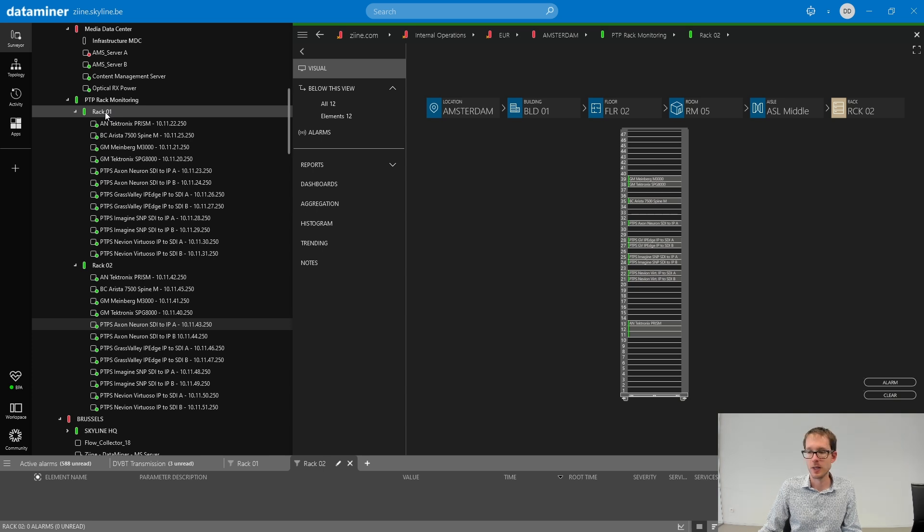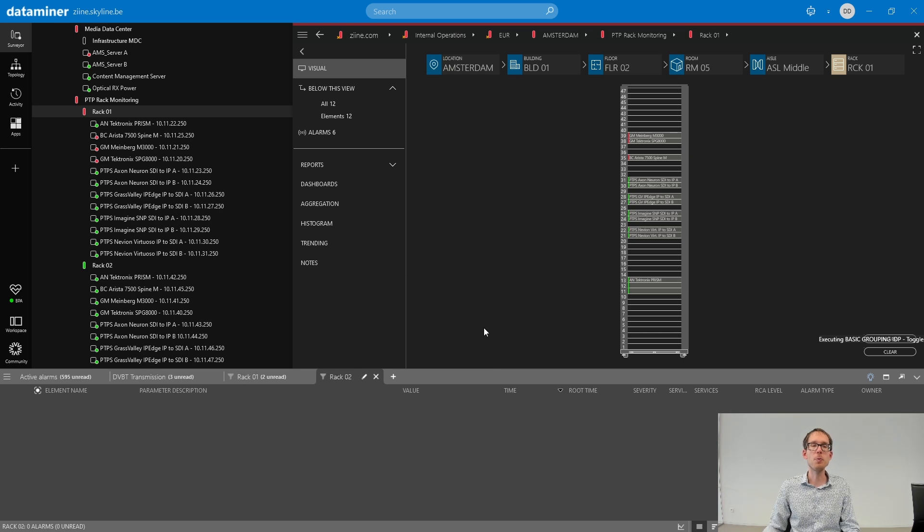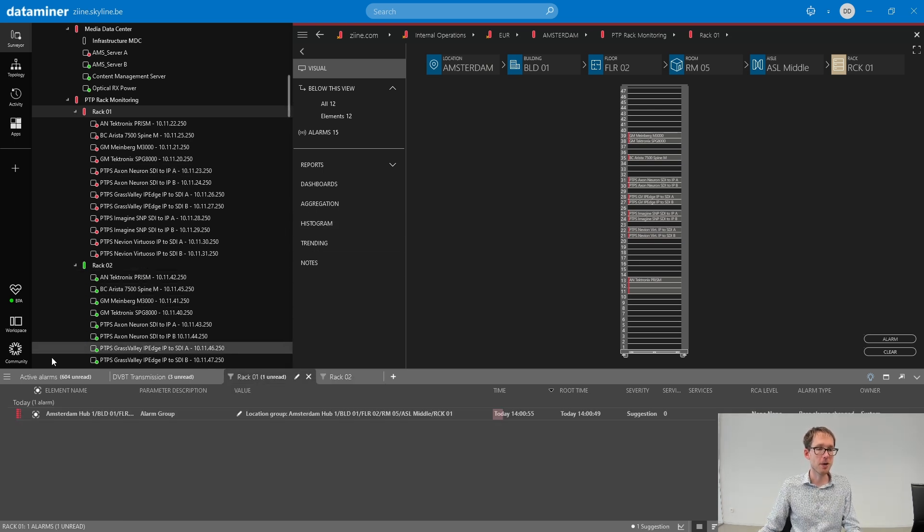Now let's see this in action. Let me create some fake alarms on rack one. Now we know that grouping based on location only requires that 75% of the devices at the given location have an alarm. So I went a bit over the top here and I created alarms on all the devices. That of course should also work, but 75% of the devices would have been enough.